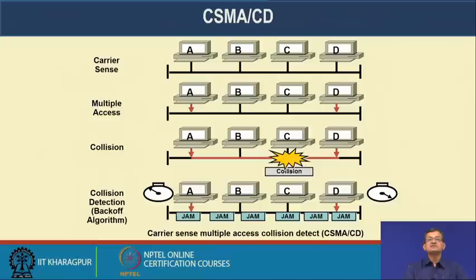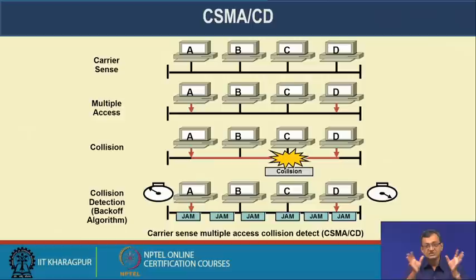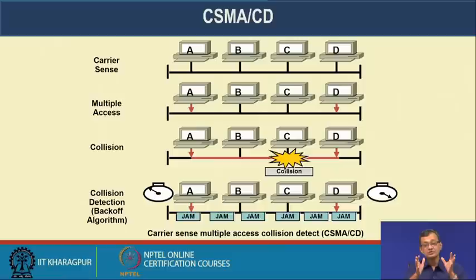In CSMA/CD, used in bus-type networks where a number of nodes share a common communication path, the station must carrier sense — determine whether the channel is free or not. If not free, it waits; if free, it transmits. There is a phenomenon of collision when multiple parties transmit simultaneously, so there must be a way to detect the collision and a back-off algorithm to handle retransmission.